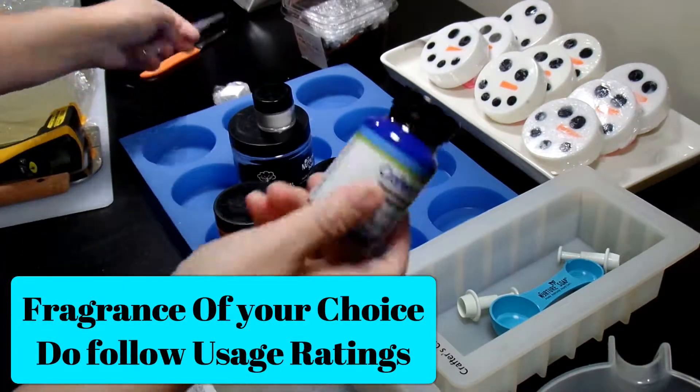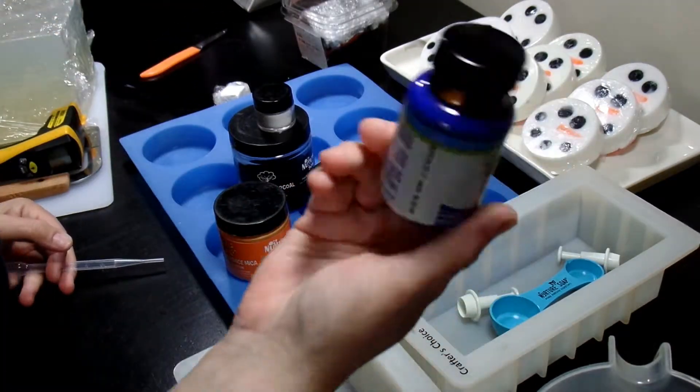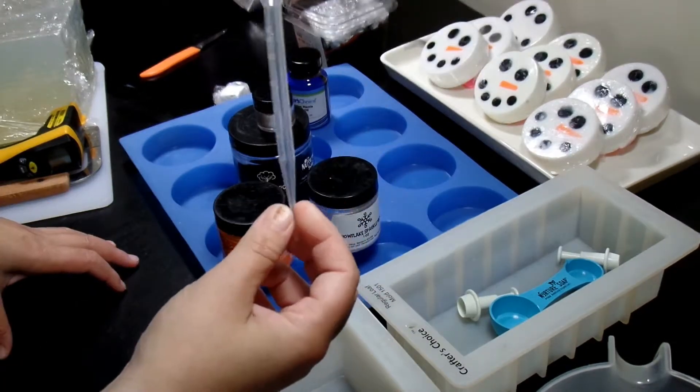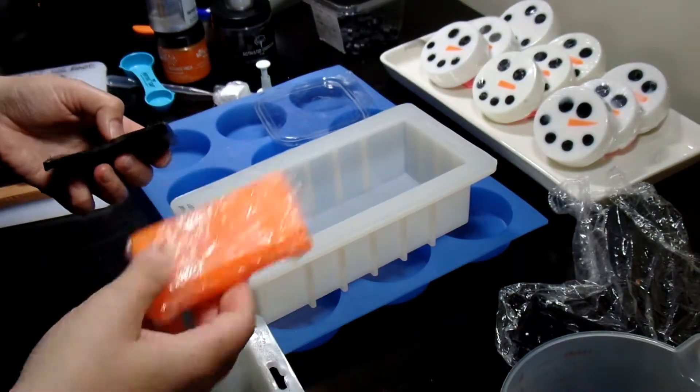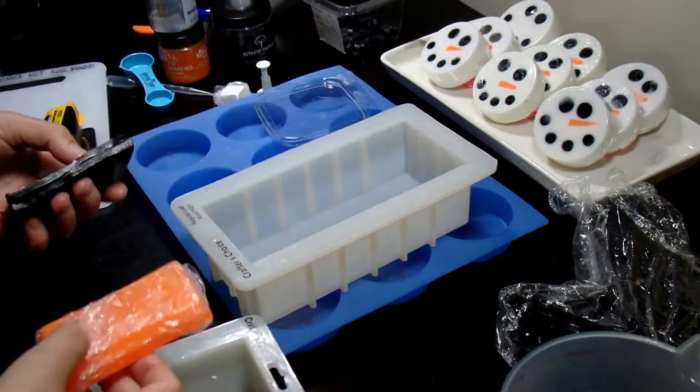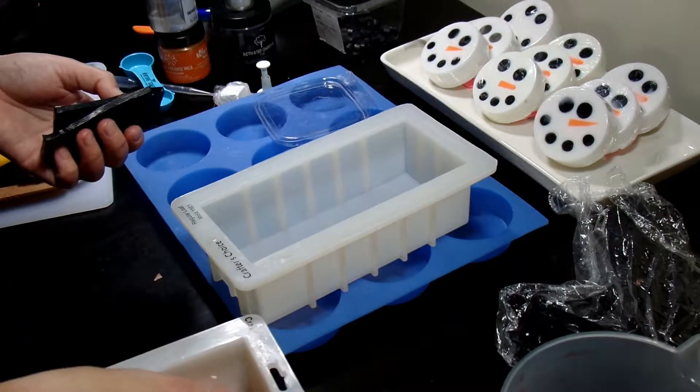I used Orange Vibrance mica for the nose. We then have our fragrance. This here is just Watermelon Mania, and of course a pipette to add your fragrance to your melted base.